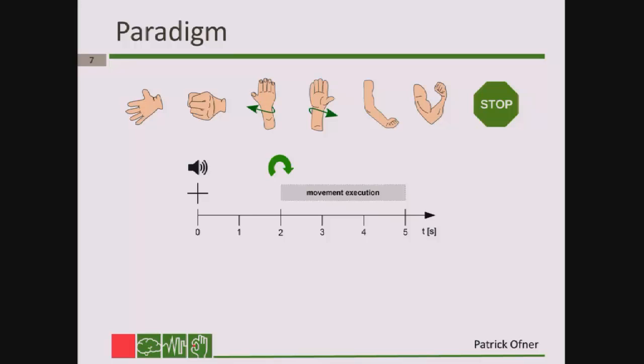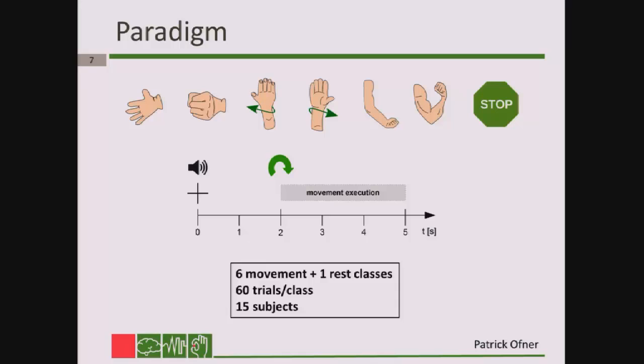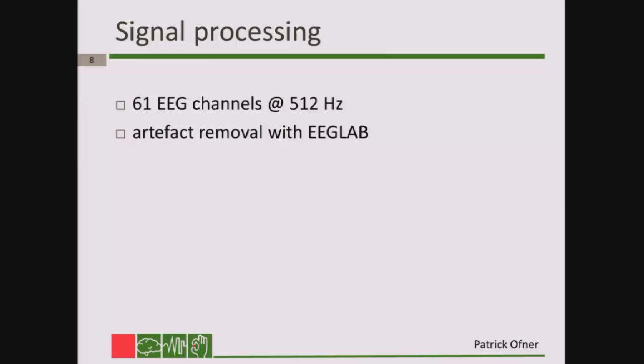The sequence of the trial looked like this. At second zero, a cross appeared on the screen together with a beep. At second two, a cue was shown asking the user to execute a movement. Importantly, the user executed the movements right after the cue and moved back to the rest position after the end of the trial — so this was a single movement, not a repetitive movement. We had six movement classes, recorded 60 trials per class, and recorded 15 healthy subjects.